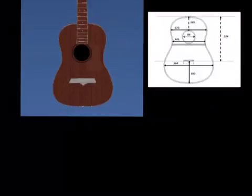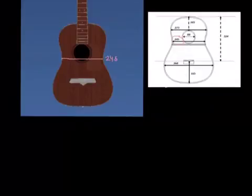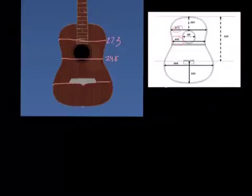I'm going to be basing my dimensions of my hyperbola off of these dimensions right here. All of these dimensions are in millimeters, so we need to change them to centimeters. It's given that 245mm is approximately the width of the guitar, so we're going to change that to 24.5 centimeters. The upper bout of the guitar is approximately 27.3 centimeters, and the lower bout is approximately 36.8 centimeters.